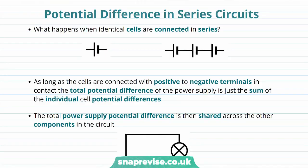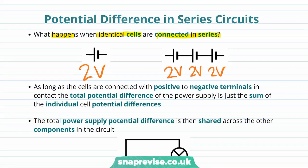Let's talk about the details of potential differences in series circuits. What happens when we take identical cells and connect them in series? As long as the cells are connected with positive to negative terminals in contact, the total potential difference of the power supply is just the sum of the individual cell potential differences.